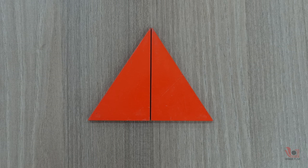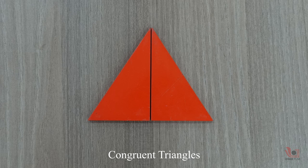Here you can see two identical right-angle triangles. These triangles are also known as congruent triangles. Two triangles are said to be congruent if their corresponding sides are equal in length and their corresponding angles are also equal in measure.